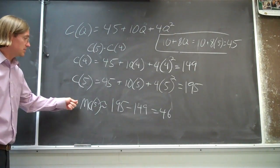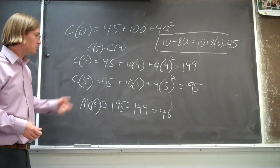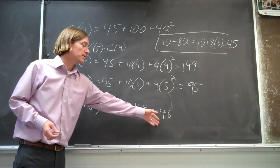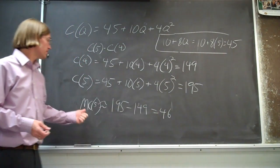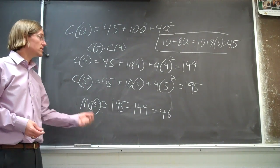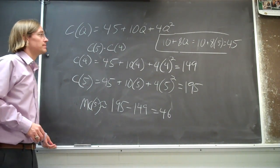This is the more exact answer because we're taking that instantaneous rate of change. But the subtraction method is also a sound way to do it — you can get a pretty good approximation of the marginal cost, the additional cost of producing that fifth unit.